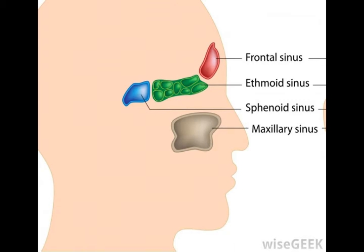And the vomer bone. The cranium also contains the paranasal sinuses, which are air-filled passages communicating with the nasal passages inside the nostrils.